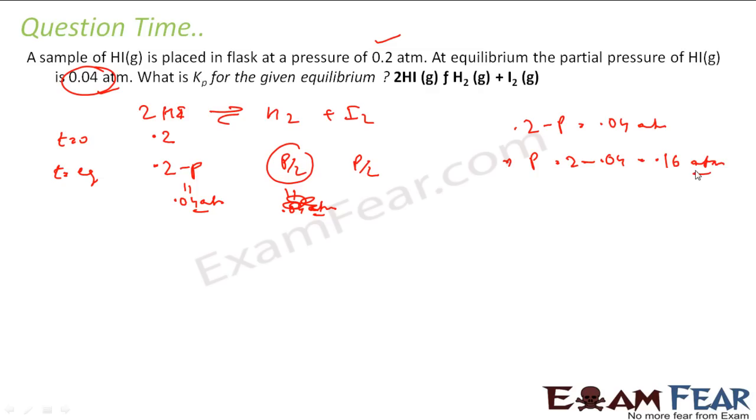If you put the value of p, the t at equilibrium will be what? This will become 0.04. This is p by 2, that is 0.16 by 2, that is 0.08, and this is also 0.08.